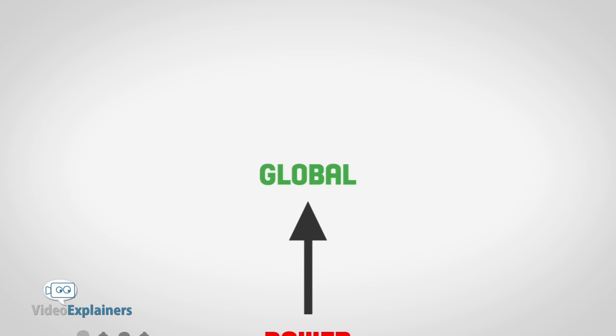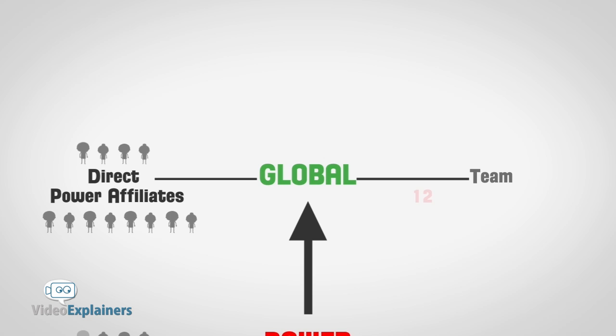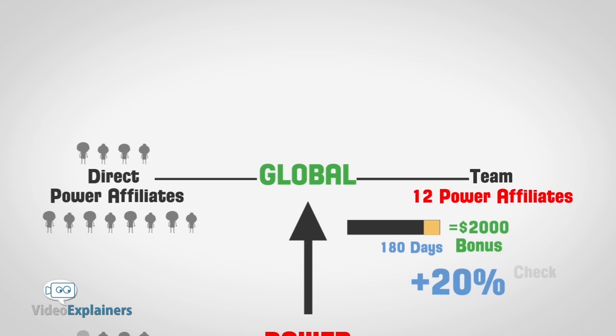Global is next. And to reach this goal, you need a minimum of four direct power affiliates and a team of 12 power affiliates. And if you do this within your first 180 days, you will receive an additional bonus of $2,000, as well as starting to earn the 20% check match.